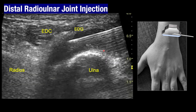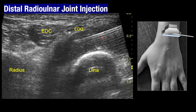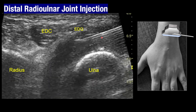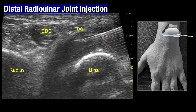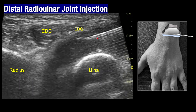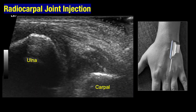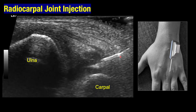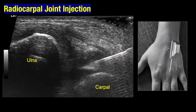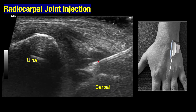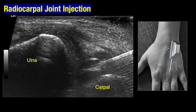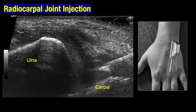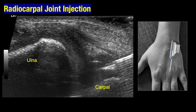Both injections are performed with a 24-gauge needle. The DRUJ recess is a fairly tight joint recess, making it difficult to inject more than 1.5 to 2 ml. For the radiocarpal joint, we use the long axis approach, inserting the 24-gauge needle with the wrist in volar flexion from the distal end of the probe moving proximally, between extensor compartment 4 and extensor compartment 5 tendons. Once the needle is in position, push all the injectate and withdraw the needle.